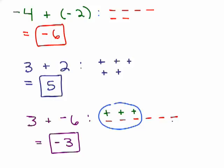Am I going to have more negatives or positives? Well, I've got 6 negatives and only 3 positives, so I'm going to have more negatives — therefore my answer is negative. How many more? If you have 6 of one and 3 of the other, you're going to have to subtract. That's exactly the rule: if you've got different signs, you subtract their absolute values. So after I decide the answer is negative, I just take 6 minus 3 to get negative 3.